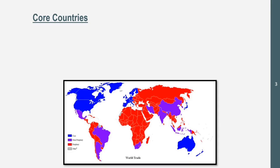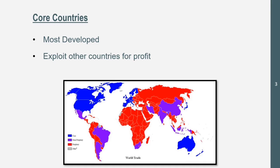Let's get started with core countries, the first of three areas. On this map, we can see core countries include Western Europe, Australia, the United States and above, and Japan. In 1900, Argentina was a core country, but now it's a semi-periphery country. Core countries are the most developed. They have big economies, and they exploit other countries for profit — primarily periphery countries, and sometimes semi-periphery countries.